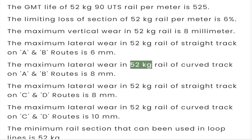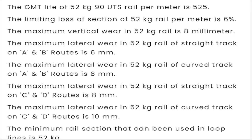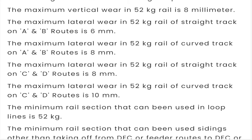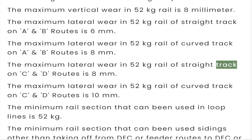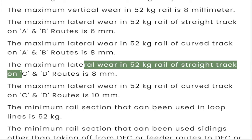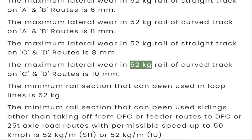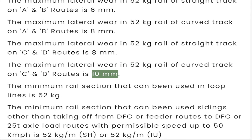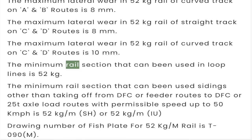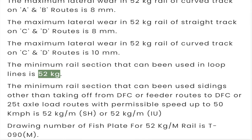The maximum lateral wear in 52 kg rail of curved track on A and B routes is 8 mm. The maximum lateral wear of straight track on C and other routes is 8 mm. The maximum lateral wear of curved track on C and other routes is 10 mm. The minimum rail section that can be used in loop lines is 52 kilograms.